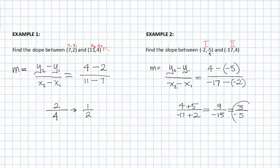And that is the slope of that line given those two coordinate points.